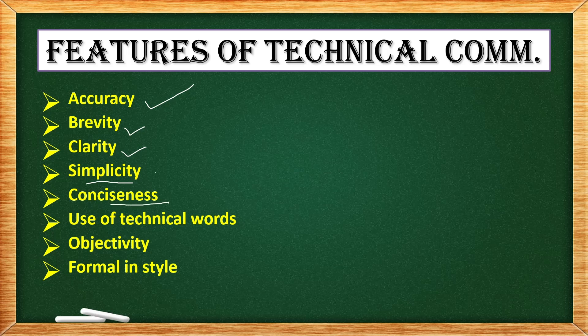Next is conciseness. Conciseness means brevity — brief, in a concise manner. Next is use of technical words. Whenever we are having technical communication, we must prefer technical words. For example, when you write a business letter, you do not use layman language. In fact, you use technical words like proper salutation, proper complimentary clause — 'yours truly' or 'yours sincerely', 'as per your convenience, we will deliver the products.' So certain technical words should be used when writing a business letter in the company.